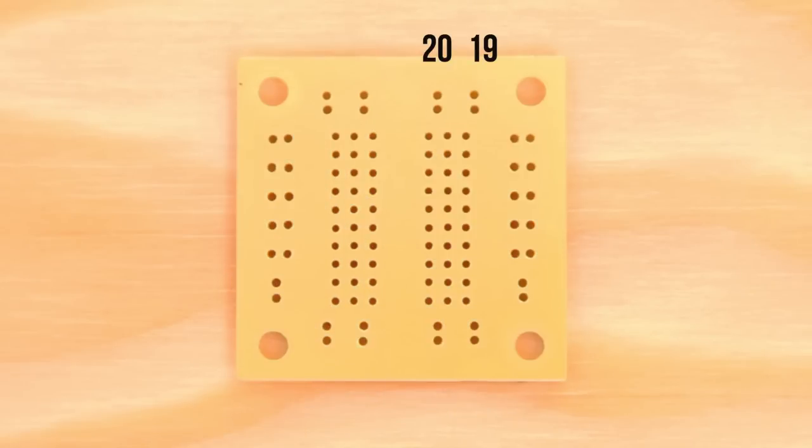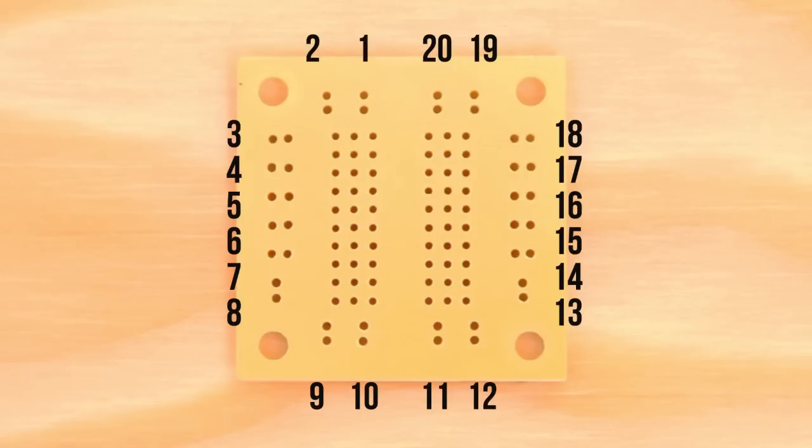Then label the holes on the component side of the board, A through E, beginning with A in the center of the board and moving outward towards the edge. Component connections will be called out based on this number and letter coordinate system, so make sure you follow it exactly.